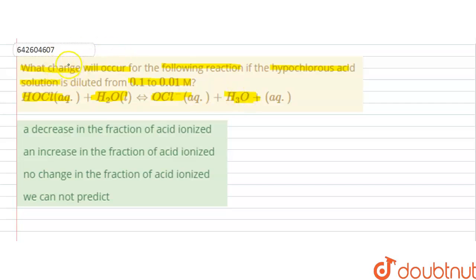In this solution, we have to find out what change will occur for this reaction when the hypochlorous acid solution is diluted from 0.1 to 0.01 molar aqueous solution.